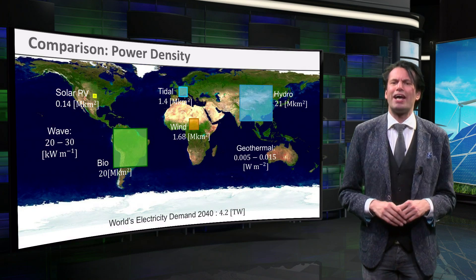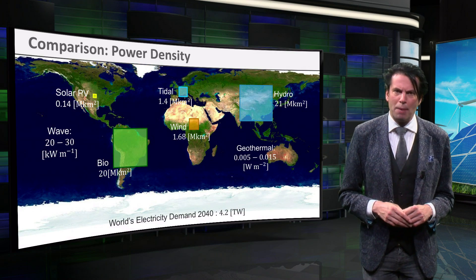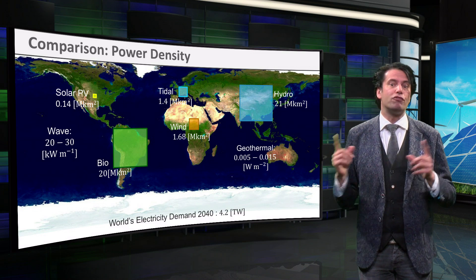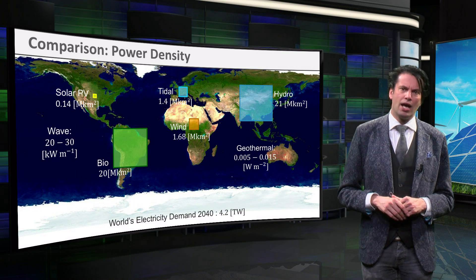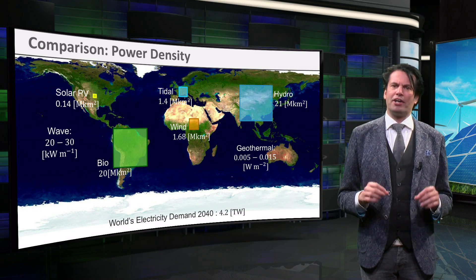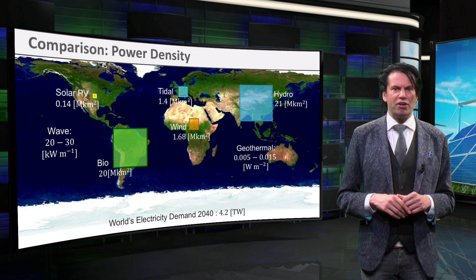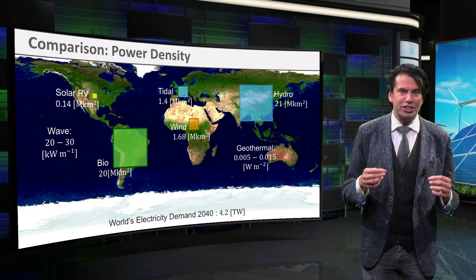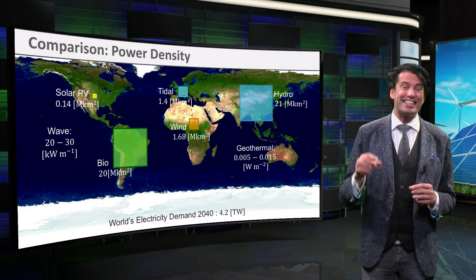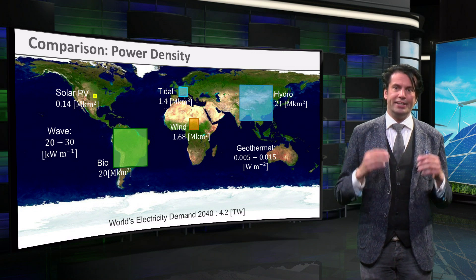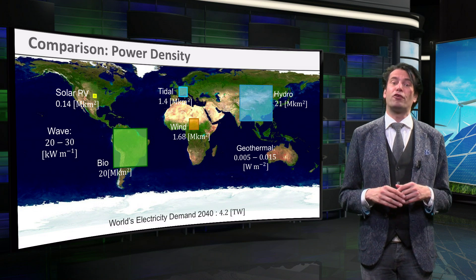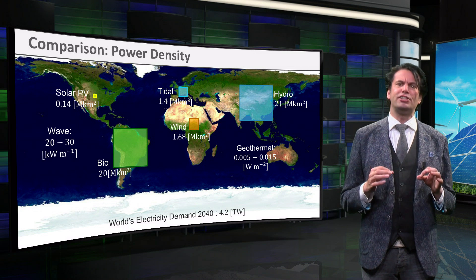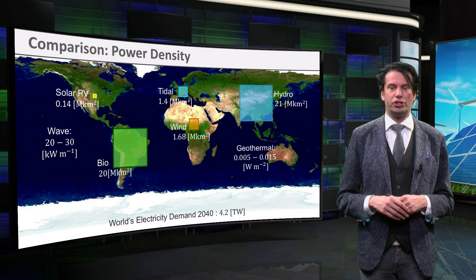Let's take a look at the world map that we have used at the end of each of this week's lectures. As a reminder, the blocks represent the area that each technology requires to meet the world's electricity demand in 2014. This map is therefore an indication of the power output density of renewable technologies.